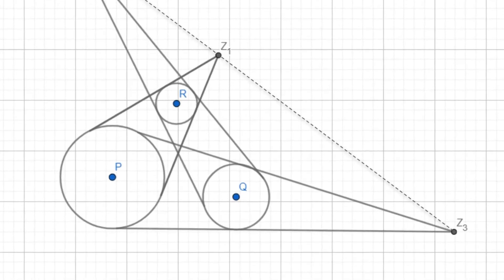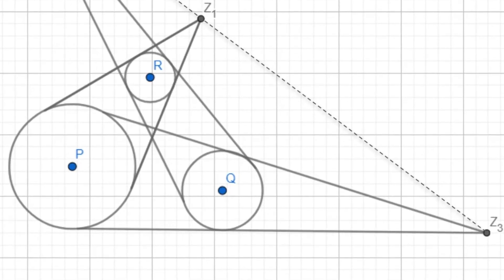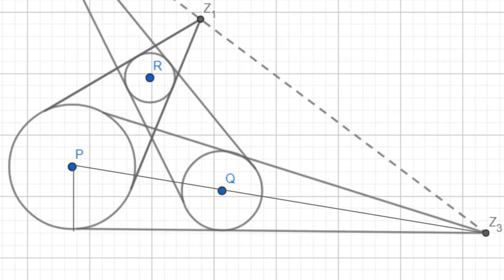We start by examining Z3. Triangles have been helpful in the past, so we draw a triangle using a radius of P and a line from P to Z3. It seems like the line PZ3 goes through Q, which we can easily prove.